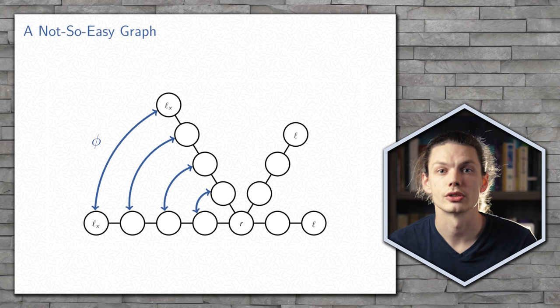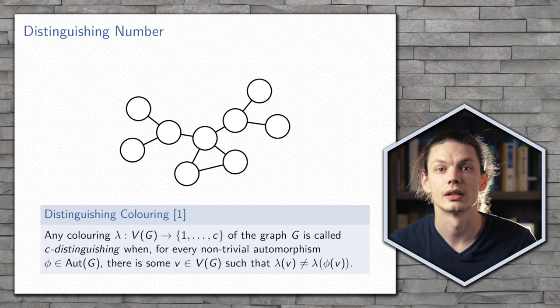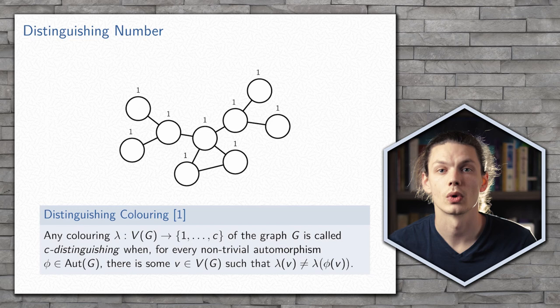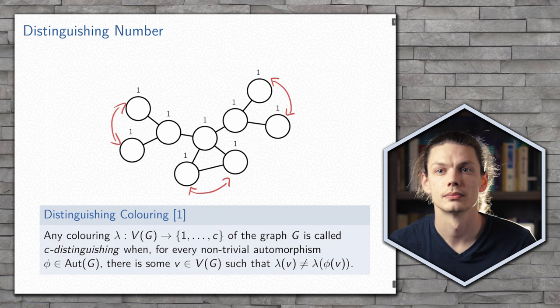So we have too much symmetry here — we have an automorphism that can switch these two branches. This leads us into the idea of having a distinguishing colouring, which is any colouring of the graph that cannot be preserved by any of the graph's automorphisms. In this example, we can start by colouring all of the vertices in one colour, but we see that all of these leaves and the corners of this triangle can be switched, which preserves the labelling.